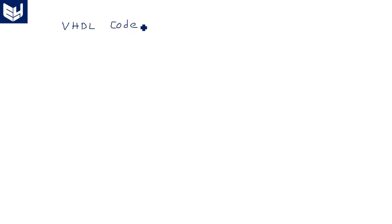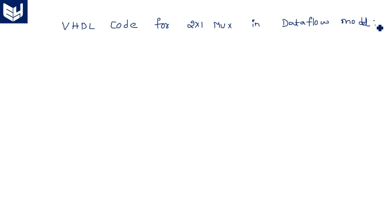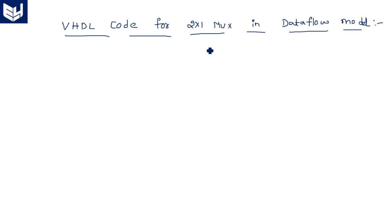First let us write a data flow model — VHDL code for a 2 by 1 multiplexer. In the data flow model, it is very easy: we directly write the code based on the expression. Since we already have the expression, we can directly substitute it in the architecture part.